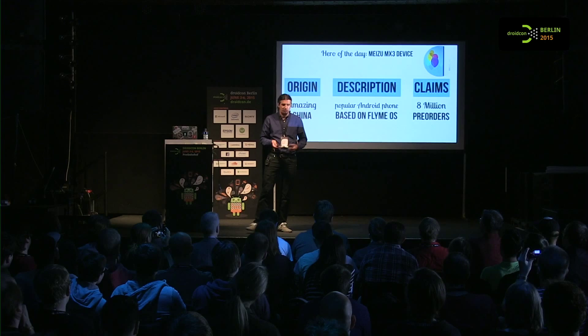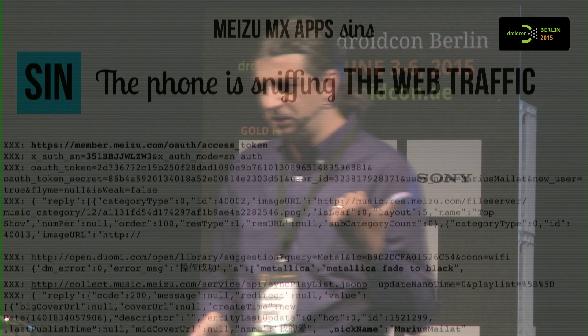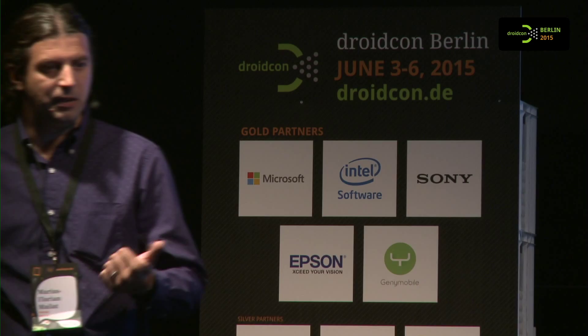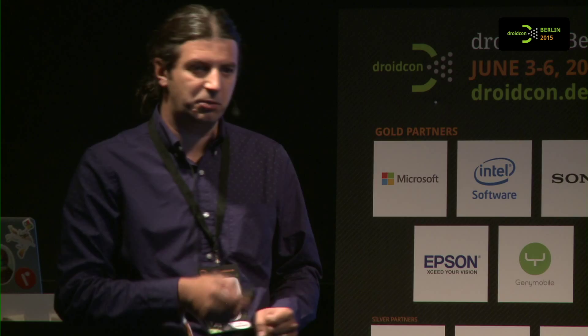We're talking about a device sold in 20 million pieces. You can make just a simple flashlight app or whatever, which reads this file, because the file is available for all apps to read. At that point, I informed Meizu, and only three months later they fixed it. Meanwhile, I went public with this, so I have no idea if somebody used it. Just to give you an idea: when you customize a ROM and the platform, these are the risks.